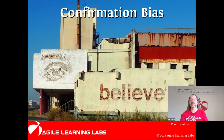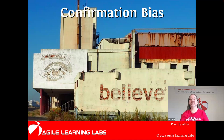Confirmation bias leads us to think that contrary evidence isn't so valid or important, and to overvalue the evidence that says our current understanding of what the product should be is correct.